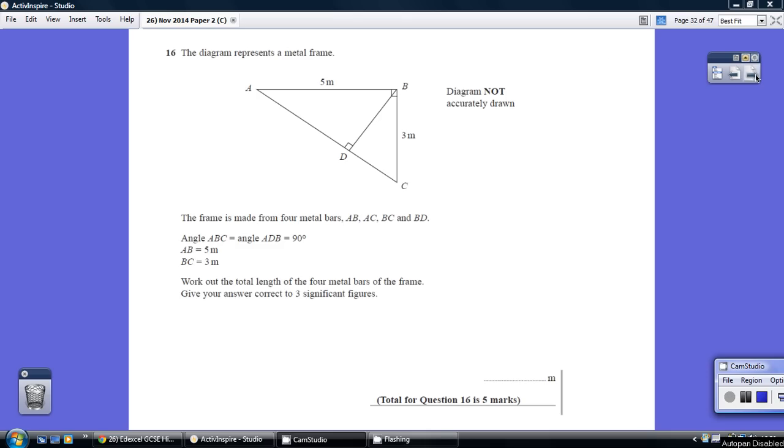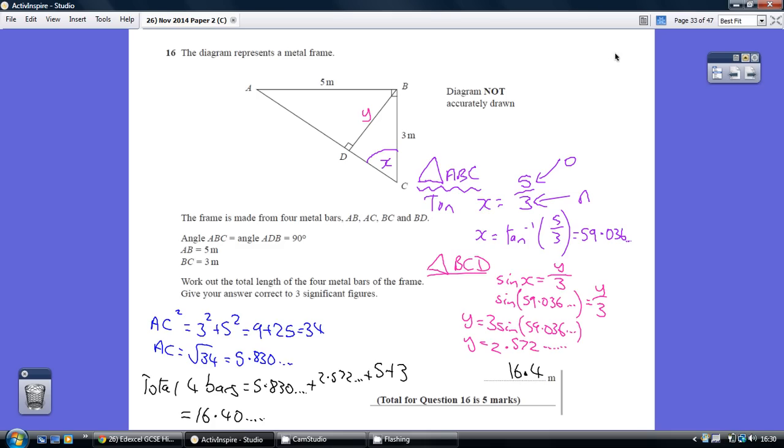Question 16. We've got to work out the total length of the four metal bars. AB is 5 and BC is 3, so we've got to work out the two other bars, AC and BD. Let's start off with AC.